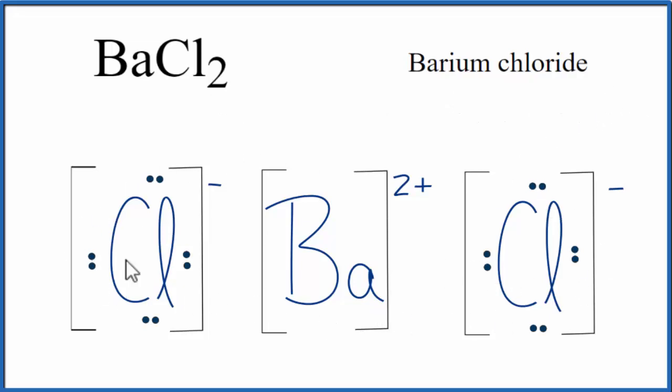Note that this is what we call a formula unit. With ionic compounds, we have crystals, and they're made up of repeating formula units.